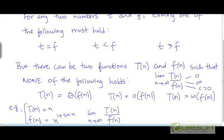Well, look at these two functions: t is equal to n, and f is n to the power 1 plus sin(n). You may note that for very large values of n, f could be as low as 1 and it could be as high as n squared. Since sin(n) oscillates between minus 1 and 1, the power of n oscillates from 1 minus 1, which is 0, to 1 plus 1, which is 2. So for some values of n, f will be n to the power 0, and for other values of n it will be as large as n squared.